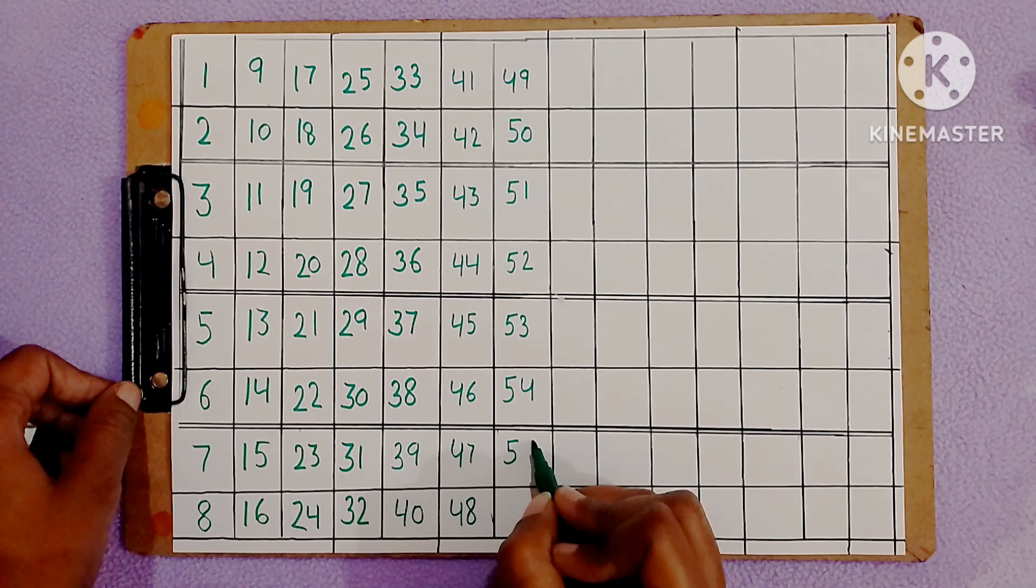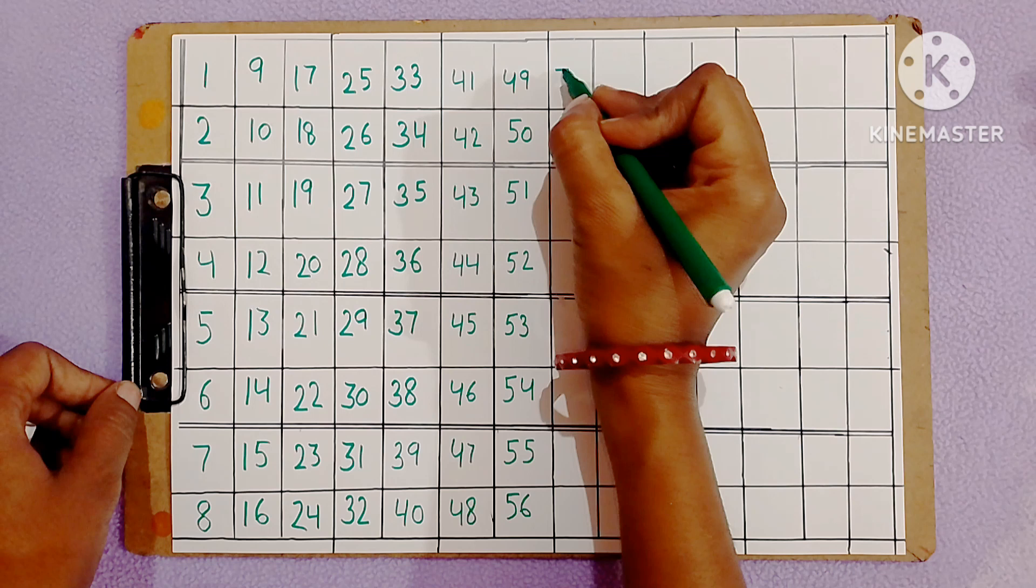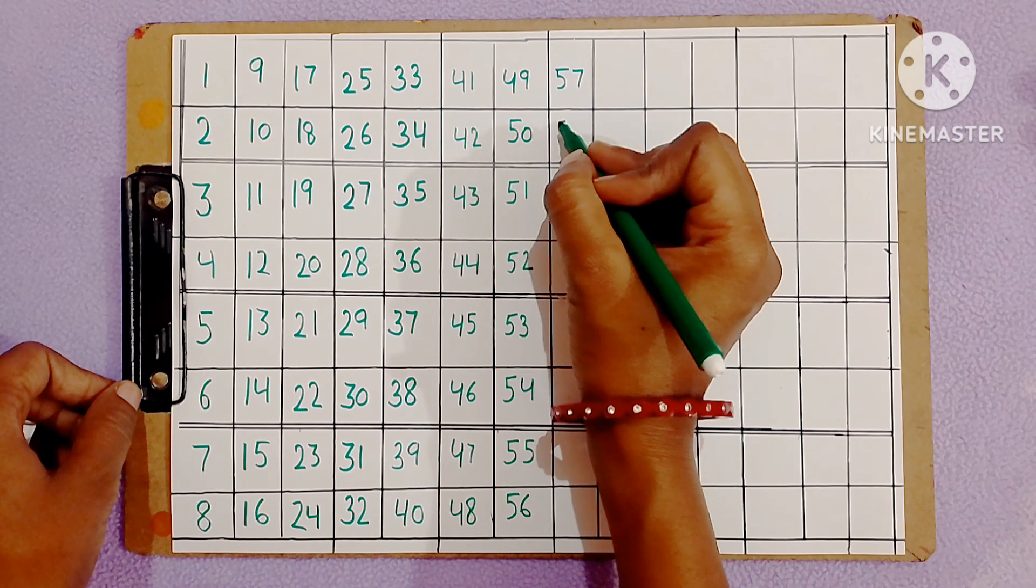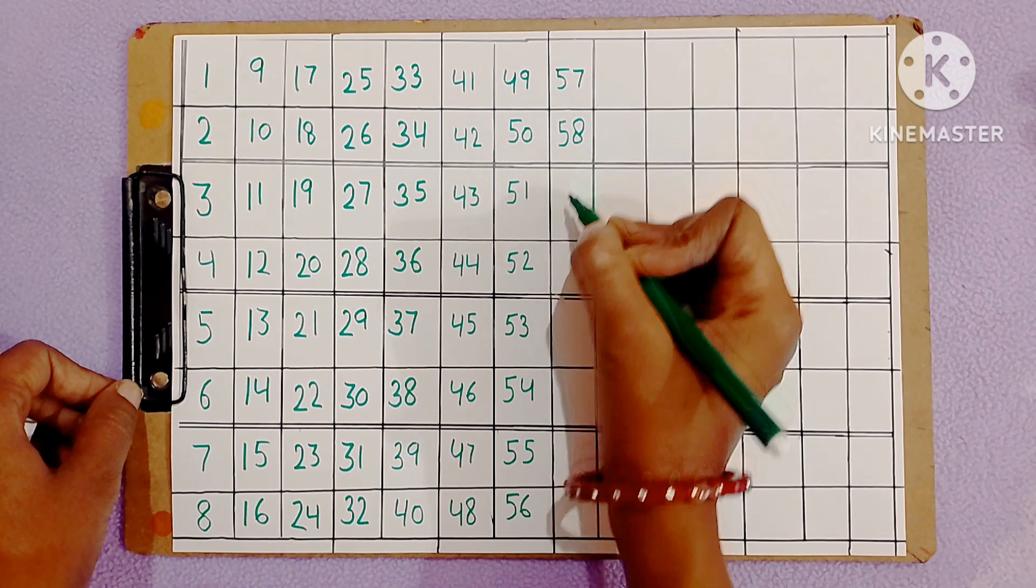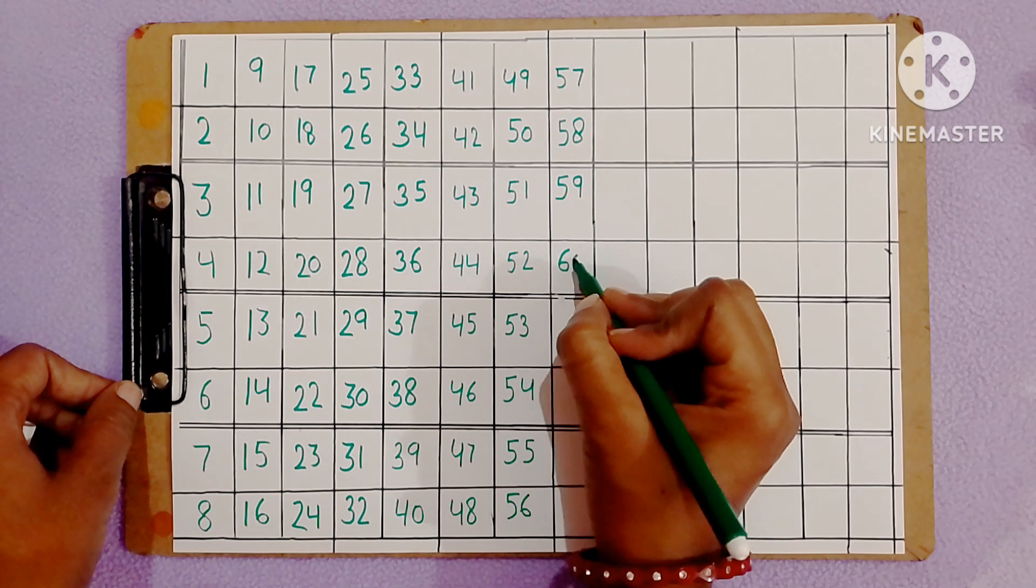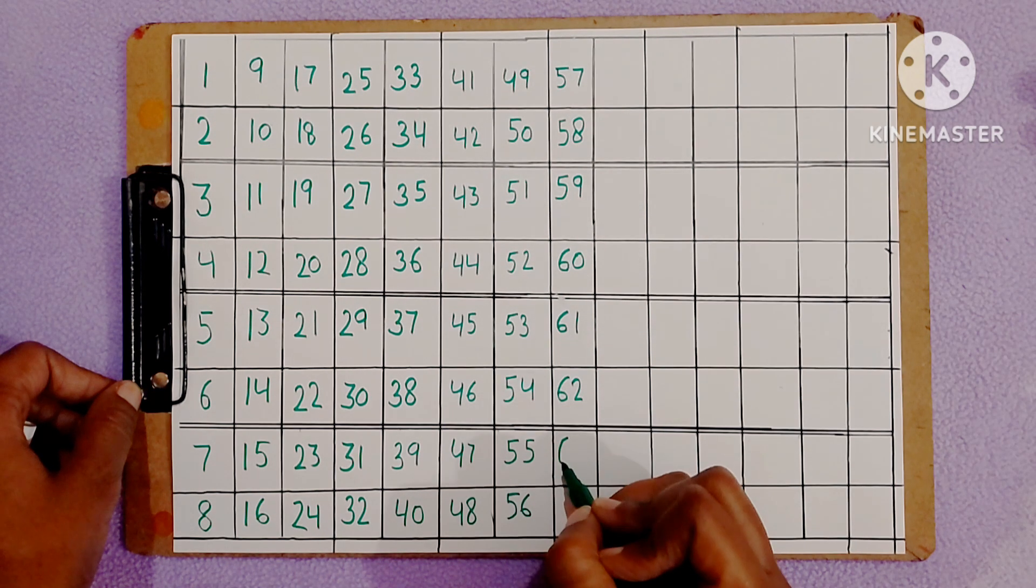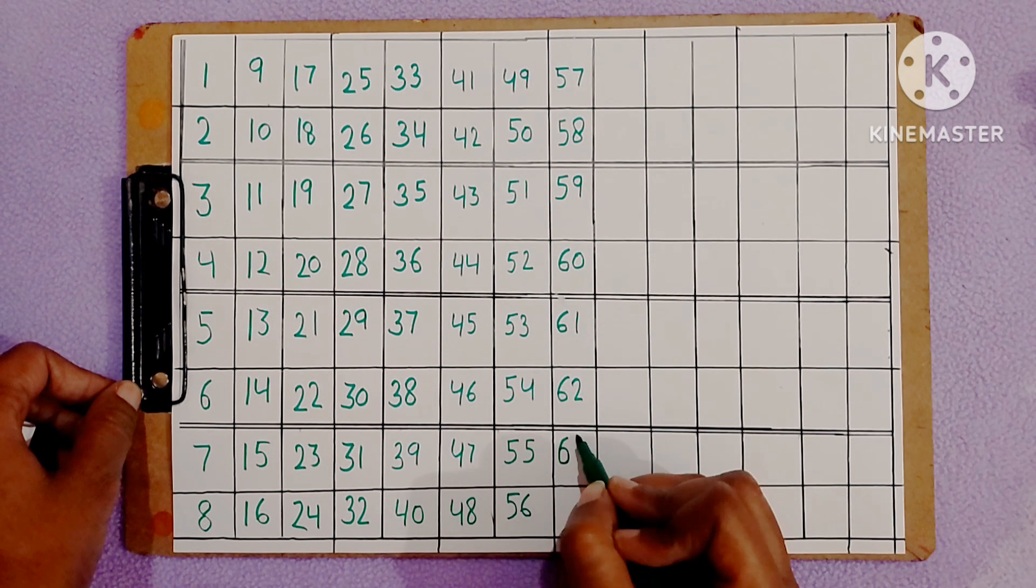Fifty-five, fifty-six, fifty-seven, fifty-eight, fifty-nine, sixty, sixty-one, sixty-two, sixty-three, sixty-four.